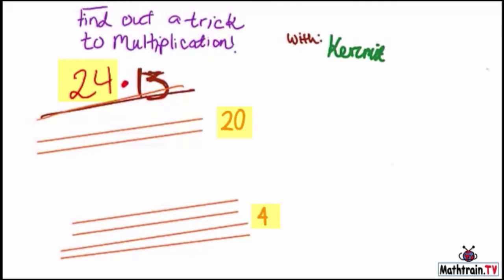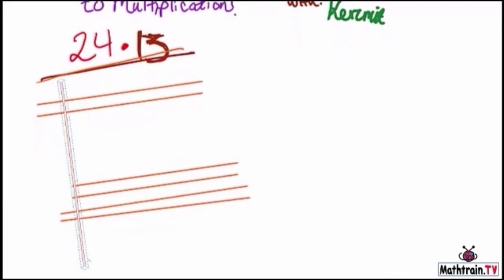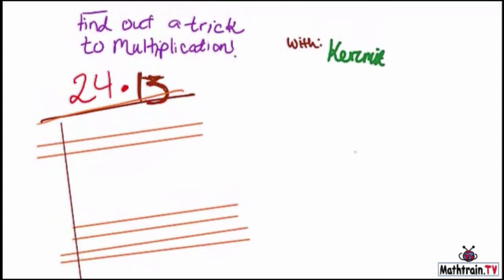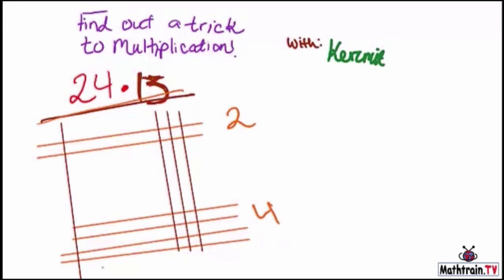Now remember, this is just a trick. You don't always have to use this. Okay, so now I'm going to draw the 13. So we only need one line here for the tens. But then, when we get to the 13, we need three lines. So, let's do that one, two, and three. So now, this equals 24, and this equals 13.